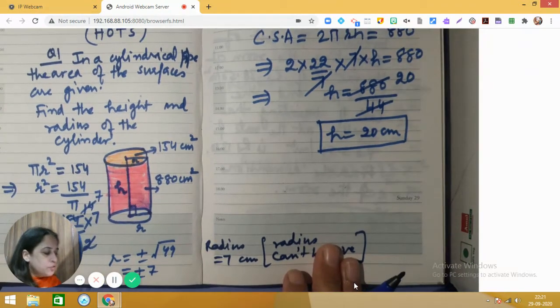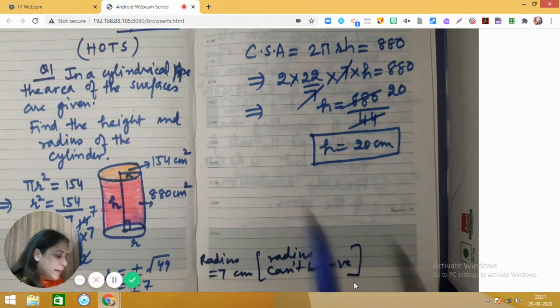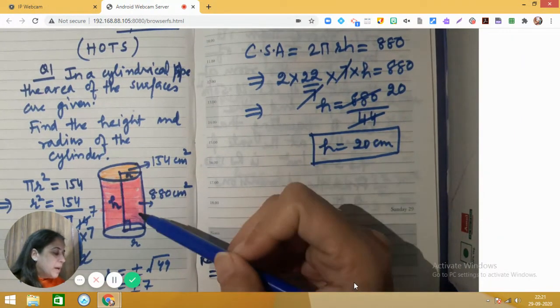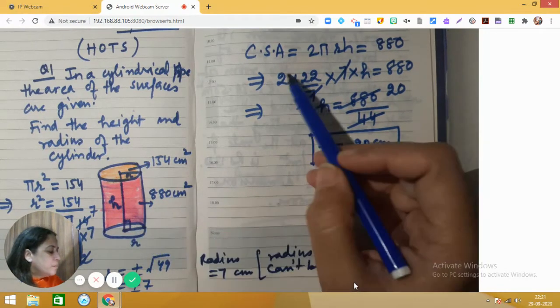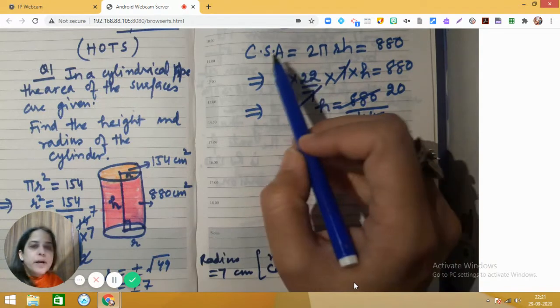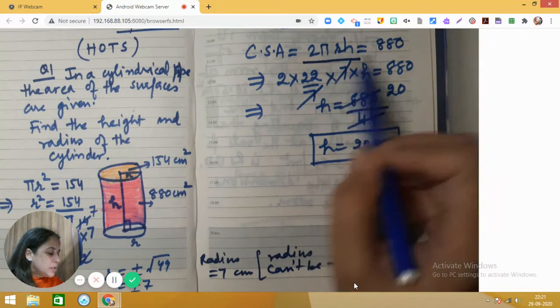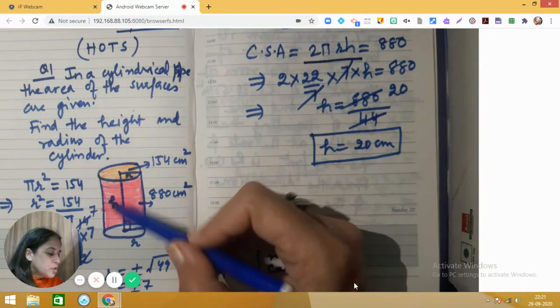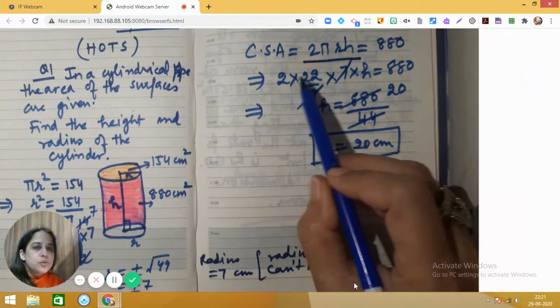Now we need to find out the height of this right circular cylinder, that is the cylindrical pipe. What is the formula for curved surface area? Curved surface area is 2 pi r h, and it is given to be 880 centimeters square. You see this shaded portion, pink colored shaded portion.